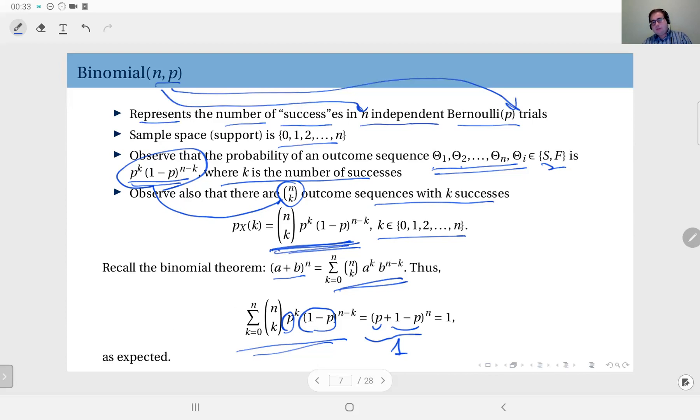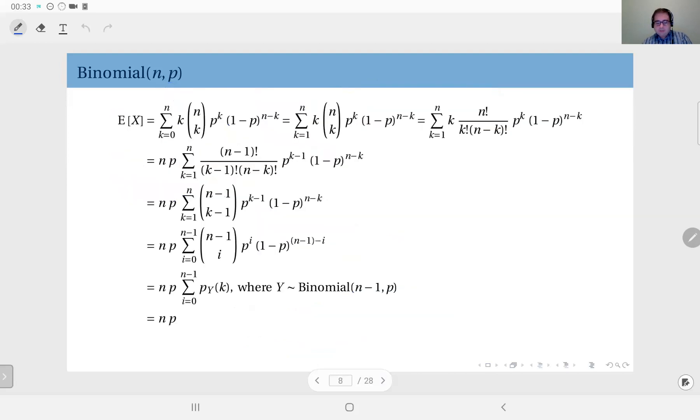Next, let's talk about the expected value of the binomial distribution with the parameters n and p. Here I have given the derivation. Let me just go through briefly here. Of course, you have the PMF and you multiply it by k and add them up.